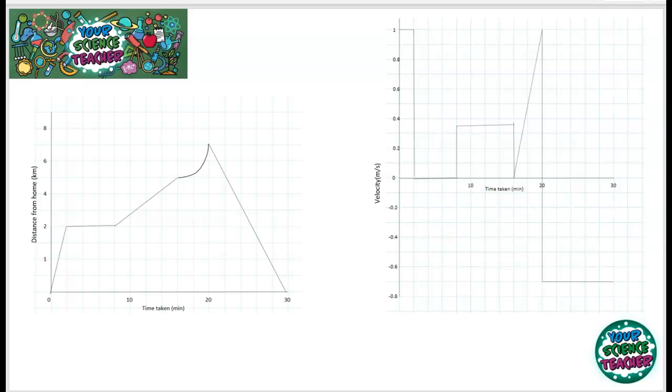The first thing to do is look at the axis titles to work out whether we've got a distance-time graph or a velocity-time graph. This one on the left says time taken in minutes and distance in kilometers, so we look at the units, and this one clearly is a distance-time graph.